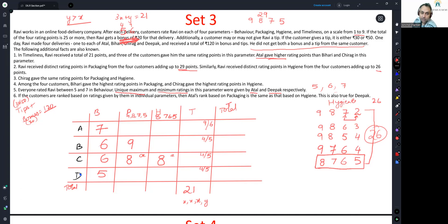Now, if the customers are ranked based on ratings given by them in individual parameters, Atal's rank on packaging is same as that on hygiene. Atal's rank in packaging is same as that on hygiene. Here he will either be rank 3 or rank 4 and rank 4. Correspondingly, this is also true for Deepak. Which means 6 and 5 have to be distributed here. But the second highest score obtained in hygiene will definitely be coming from Bihari.